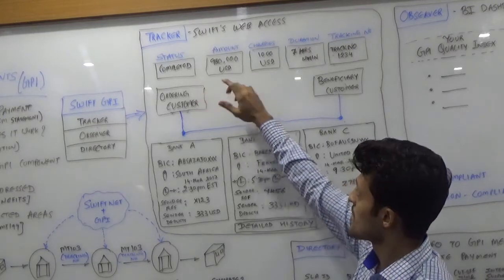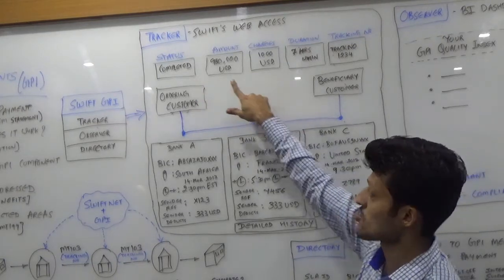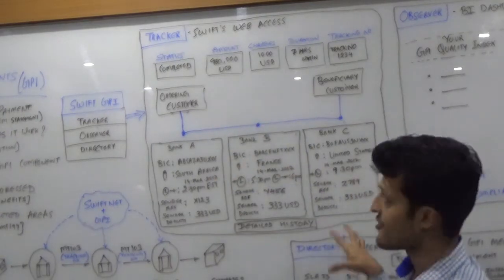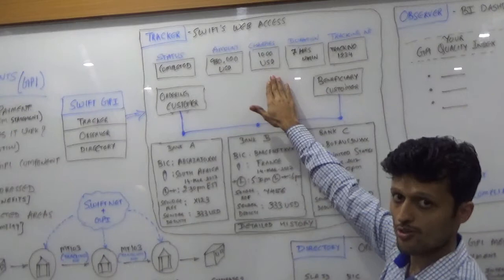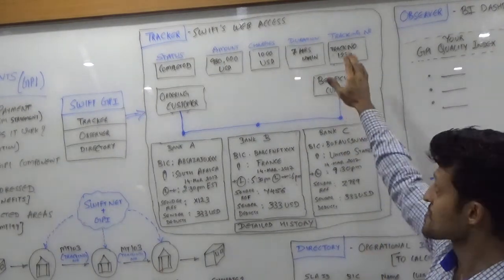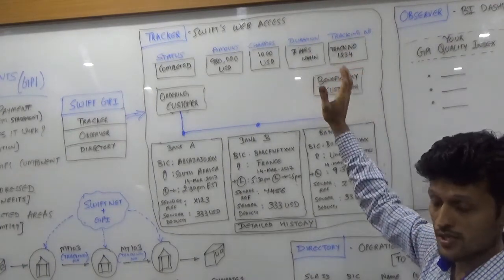We can see the amount and the charges. When I say amount, it's the amount that needs to be transferred to the beneficiary. The charges are going to be deducted, the duration it is going to take to reach the beneficiary account, and the tracking number. See, this is the same unit tracking number that was associated with the payment.